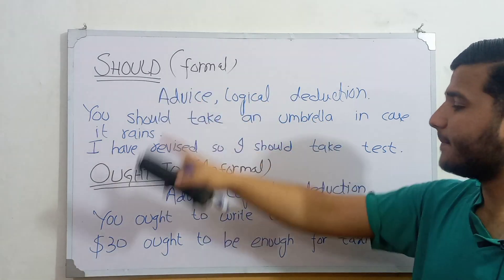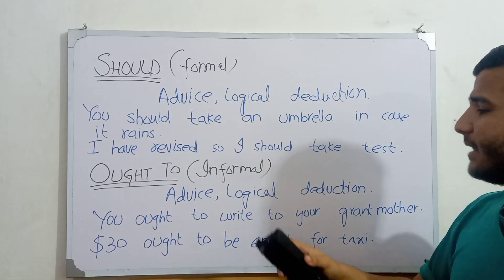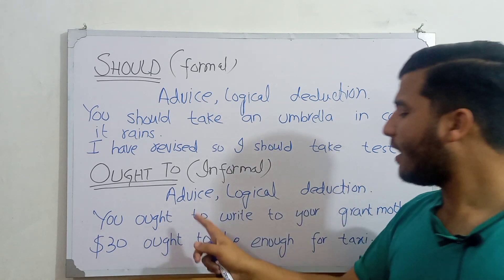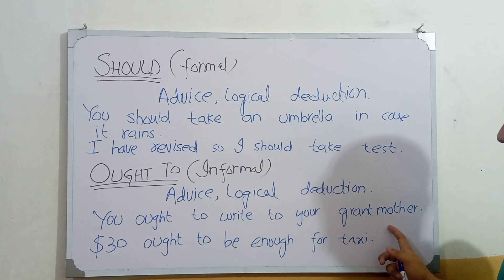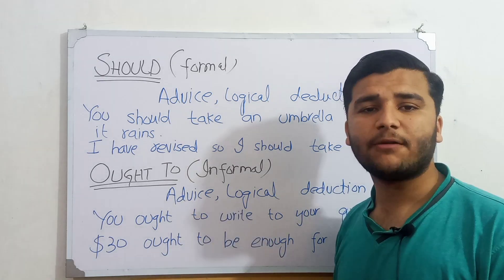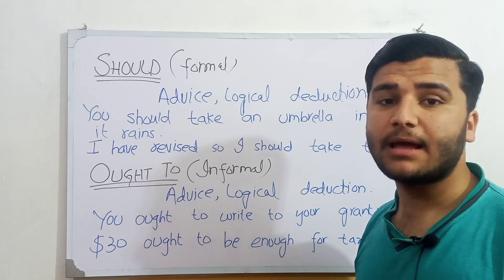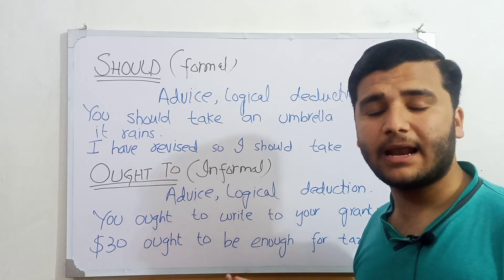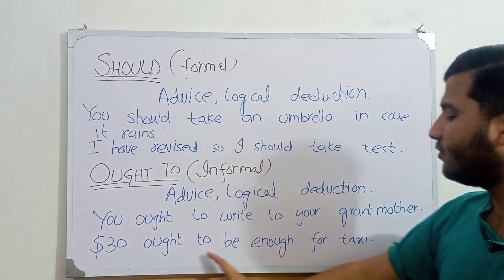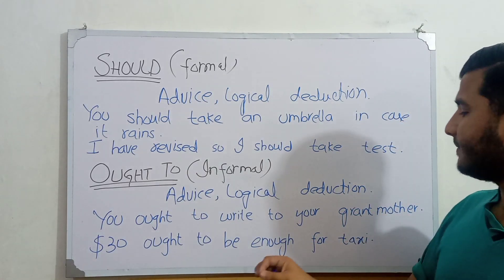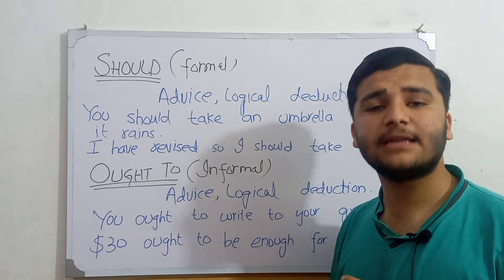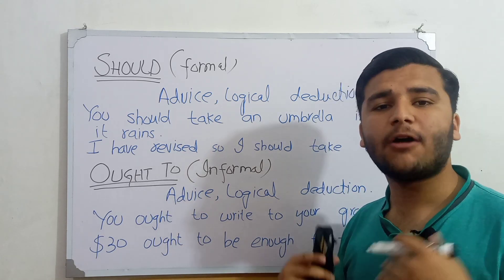'Ought to' is informal and has the same functions as 'should' — advice and logical deduction. For advice: 'You ought to write to your grandmother.' Someone is giving advice to write a letter. For logical deduction: 'Thirty dollars ought to be enough for a taxi.' Here the condition is fixed — thirty dollars is logically enough for taxi fare.